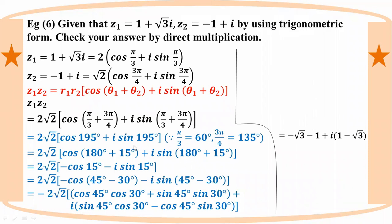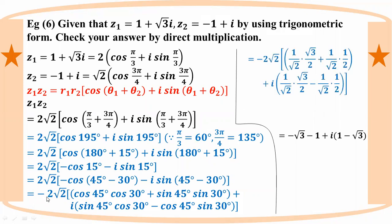Because these are not 1 over root 2 — cosine is root 3 over 2, sine is not 1 over root 2 but 1 over 2. So we get root 3 plus 1, and root 3 minus 1 as components.